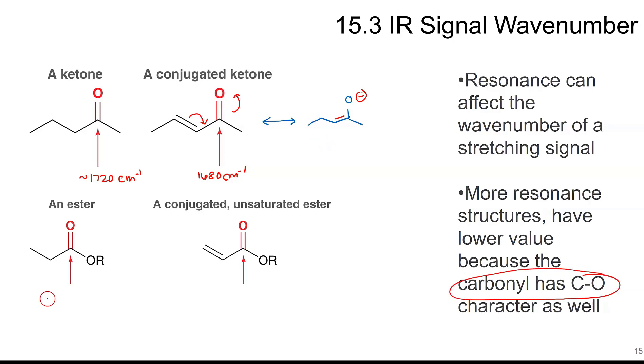An ester shows up around 1740. And this ester, it's conjugated, is around 1710. Again, you can draw a resonance structure there.